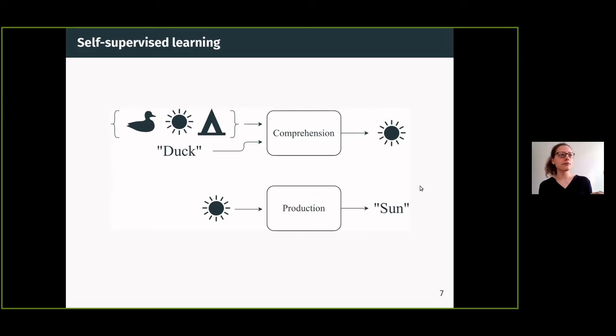We feed this object to the production module which outputs a label. So we have, we put in this object and we output a label.